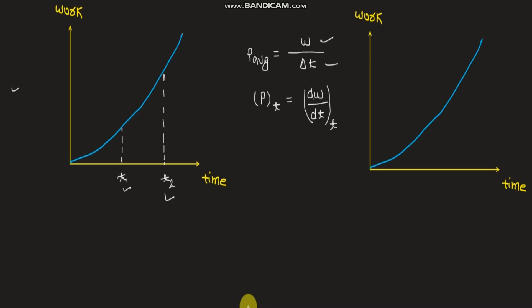We are going to discuss the amount of work transferred in this time interval. As per the graph, at a particular time t1, the work done by a particular force is w1, and correspondingly at time t2, the work done by that force is w2. As per the definition of average power, the amount of work done between t1 and t2 is nothing but w2 minus w1.